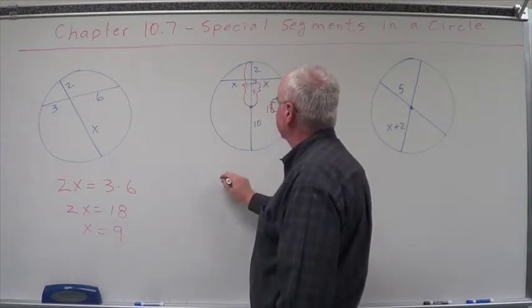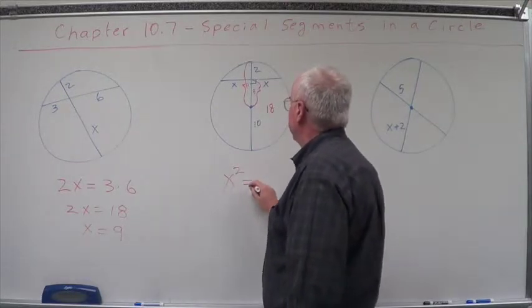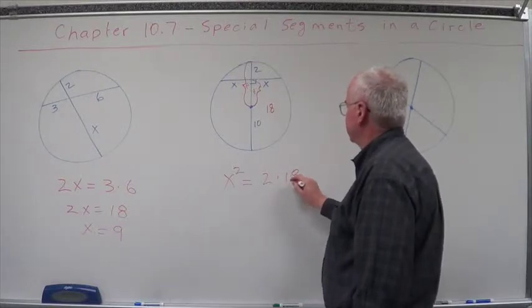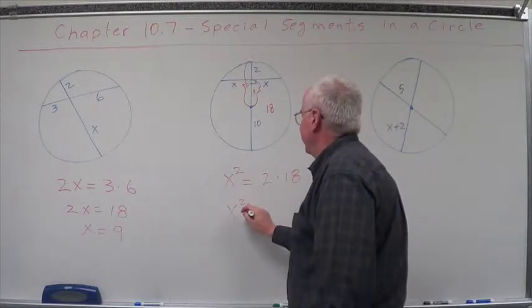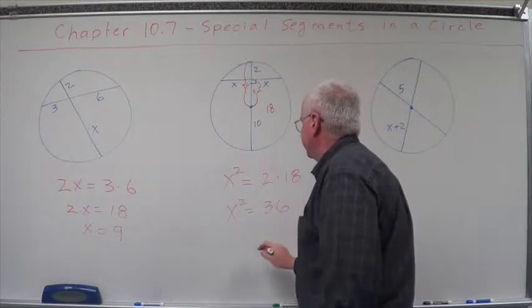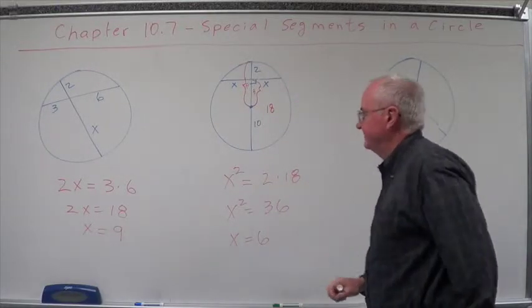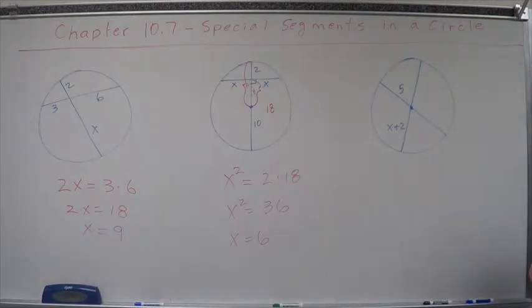So we're looking at this piece being 18, and this is that. So this is going to end up x times x is x squared equals 2 times 18. So x squared equals 36, x equals 6. Pretty simple.